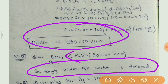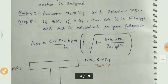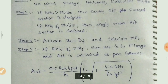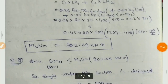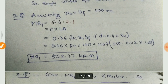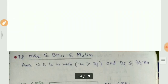Step 3: xu को df के बराबर मानना है और MR1 calculate करना है। Step 4: assuming xu equal to df = 100 mm, MR1 निकालना है per 5.4.2.1।